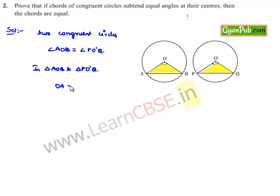OA is equal to PO' since both circles are congruent, so the radii will be equal. Similarly, OB is equal to O'Q.